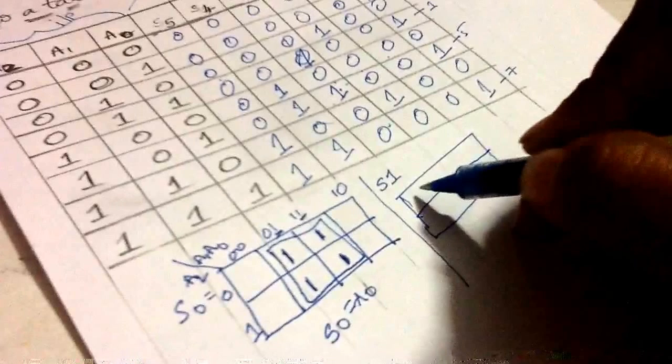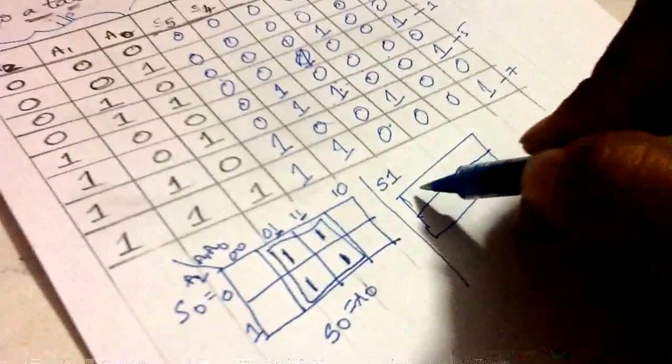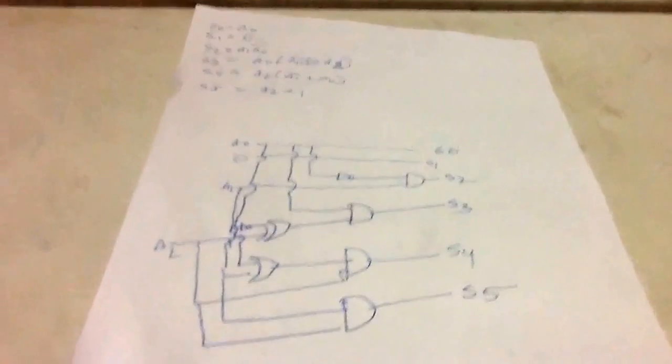Design a 3-bit combinational circuit whose output is a square of input number, and this is how you have to do it guys. If you have any doubt, please be sure to comment in the comment section below. That's all for today, have a nice day.